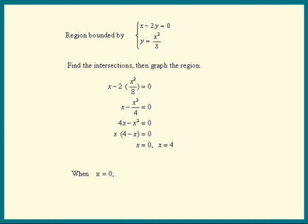When x is 0, what is y? y is x squared over 8, y is 0 also. So 0 comma 0 is an intersection point. When x equals 4, y is 16 over 8, so y is 2. That means 4 comma 2 is another intersection point.